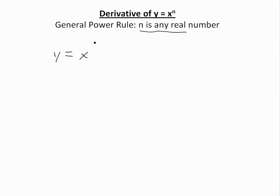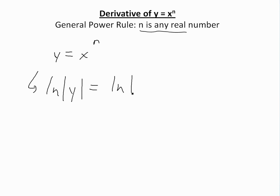If y is equal to x to the power of n, we take the natural log of both sides. We actually have to use absolute value here — ln of the absolute value of x to the n. We use absolute value because this function can be negative, for example negative 1 or negative 5, and ln is only defined for values greater than 0.